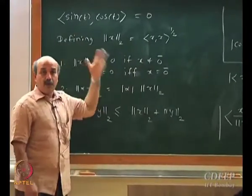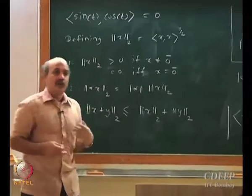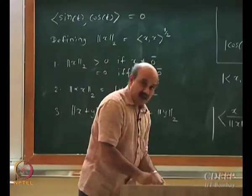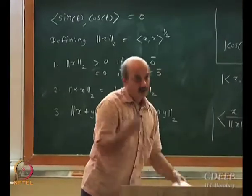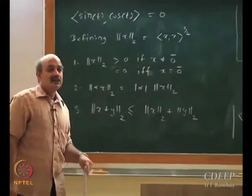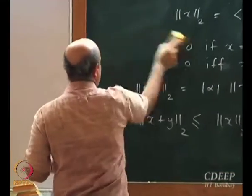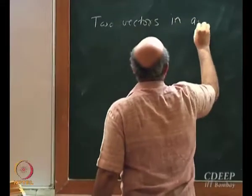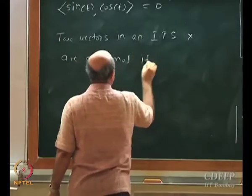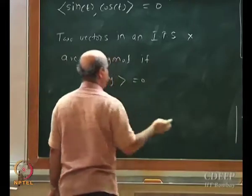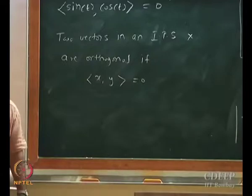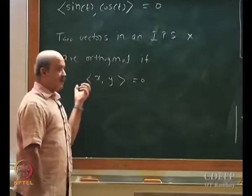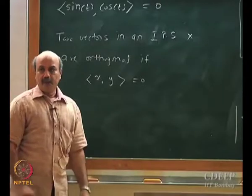You are trained to think of orthogonality in terms of three dimensions — i, j, k and so on. But in the same sense that i, j, k are orthogonal unit vectors in three dimensions, sin(t) and cos(t) are orthogonal vectors in the inner product space of continuous functions over minus pi to pi. This allows us to talk about orthogonality of functions, orthogonality of general vectors in any inner product space.